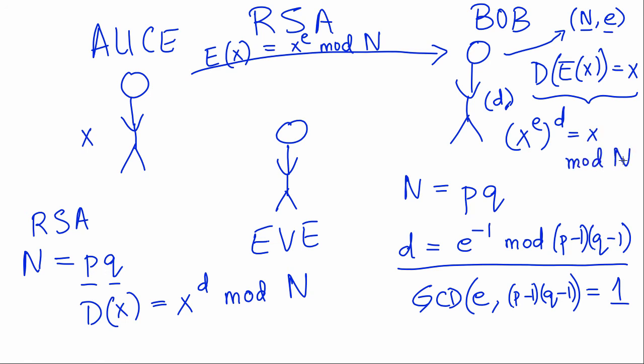This is basically how RSA works. Alice sends Bob a message after encrypting it with Bob's public key, which consists of Bob's N and his E. Then Bob decrypts the message using his private key D, and he gets back the message that Alice tried to send to him.